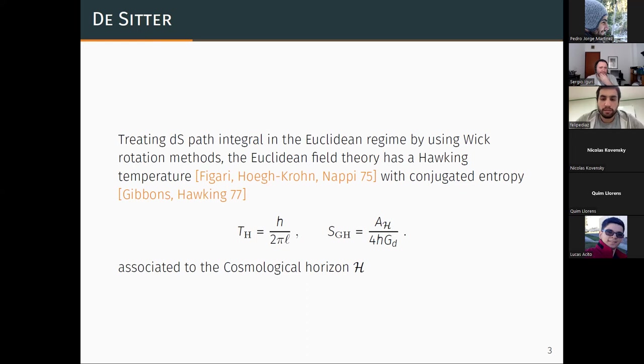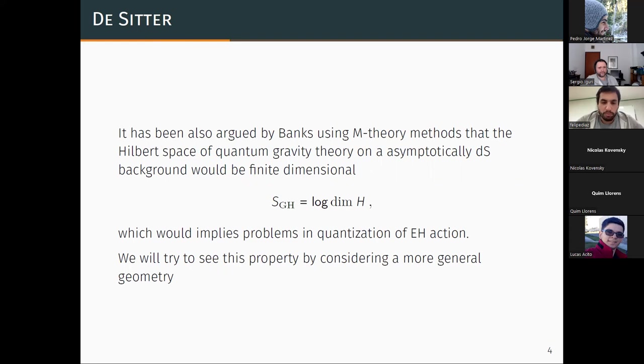One of the big problems of the entropy is that Banks and Fischler proposed using M-theory methods that any asymptotically De Sitter space quantum gravity on De Sitter will have a finite dimension of Hilbert space, which is the exponential of the Gibbons-Hawking entropy. This raises a problem in the quantization of Einstein-Hilbert action by means of perturbation theory.